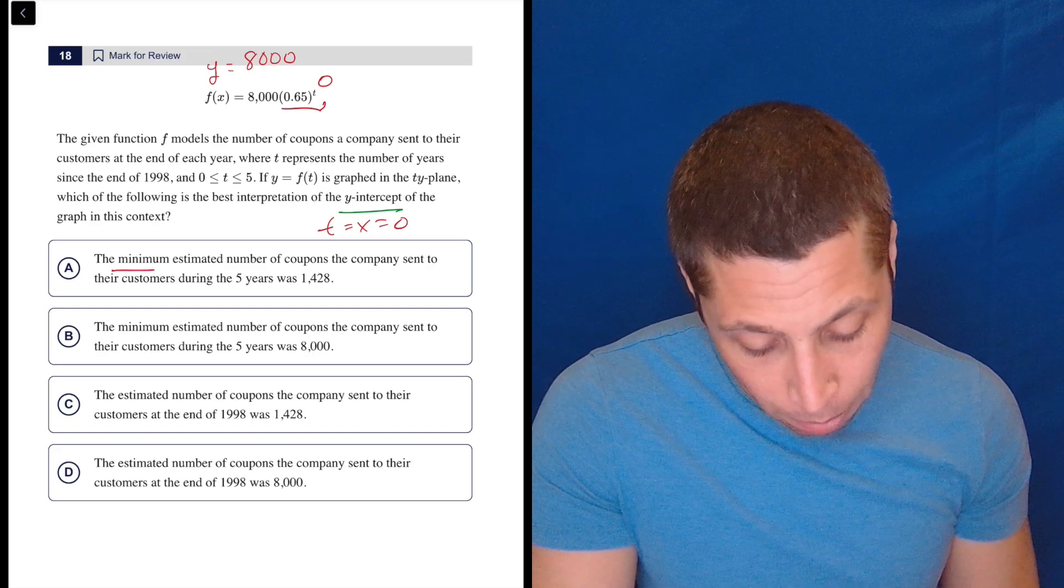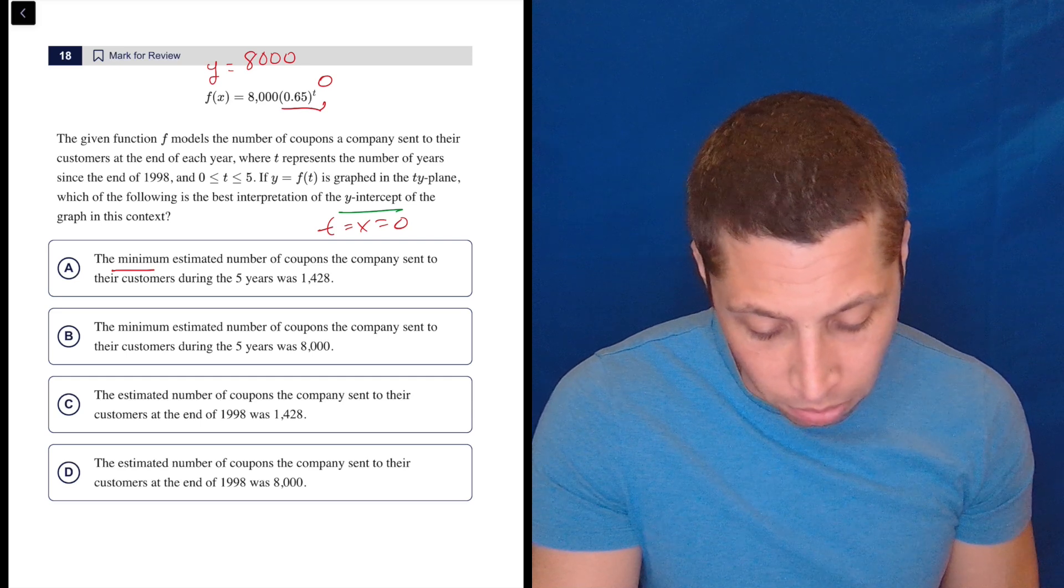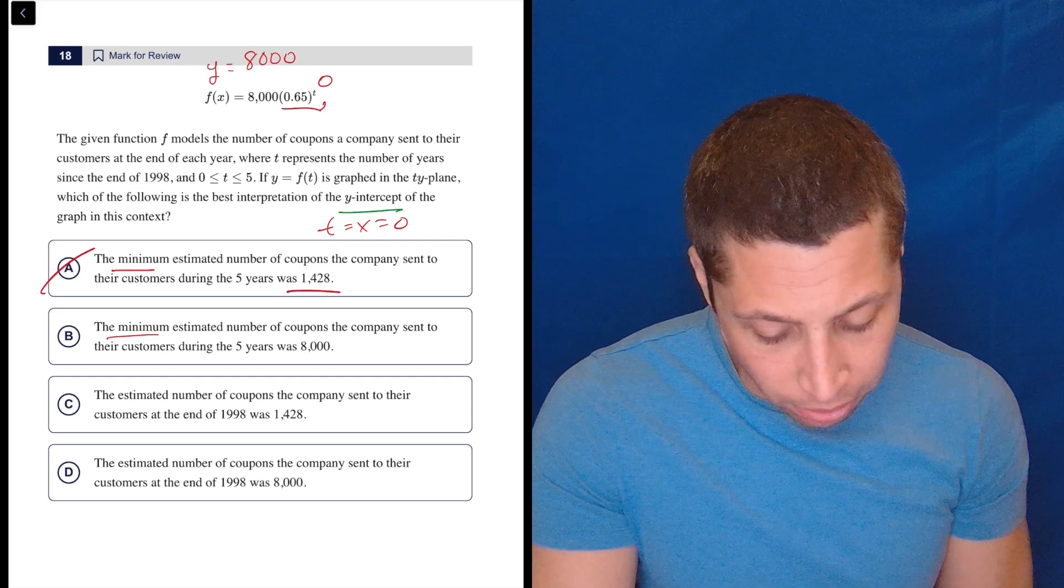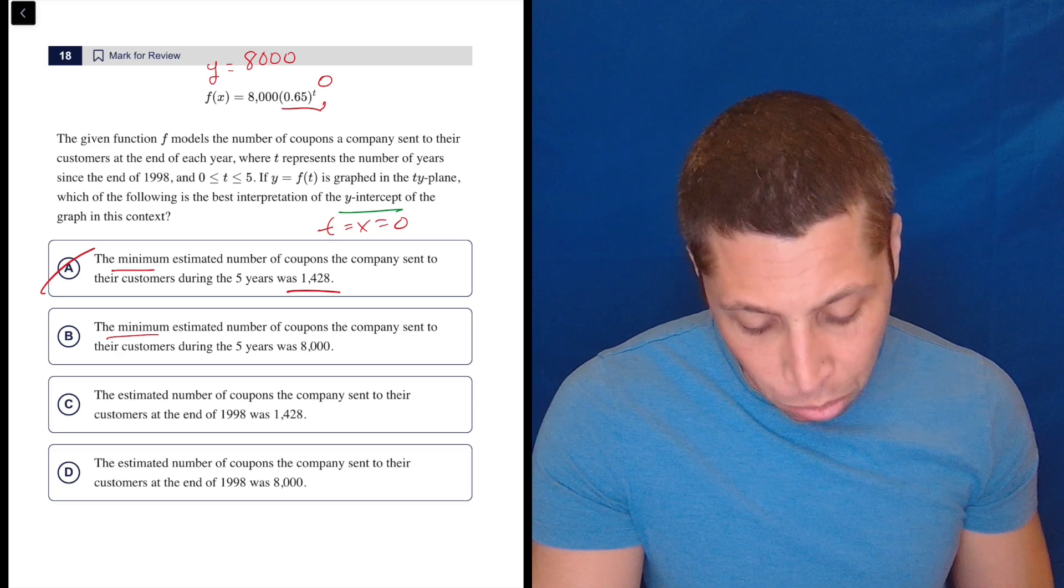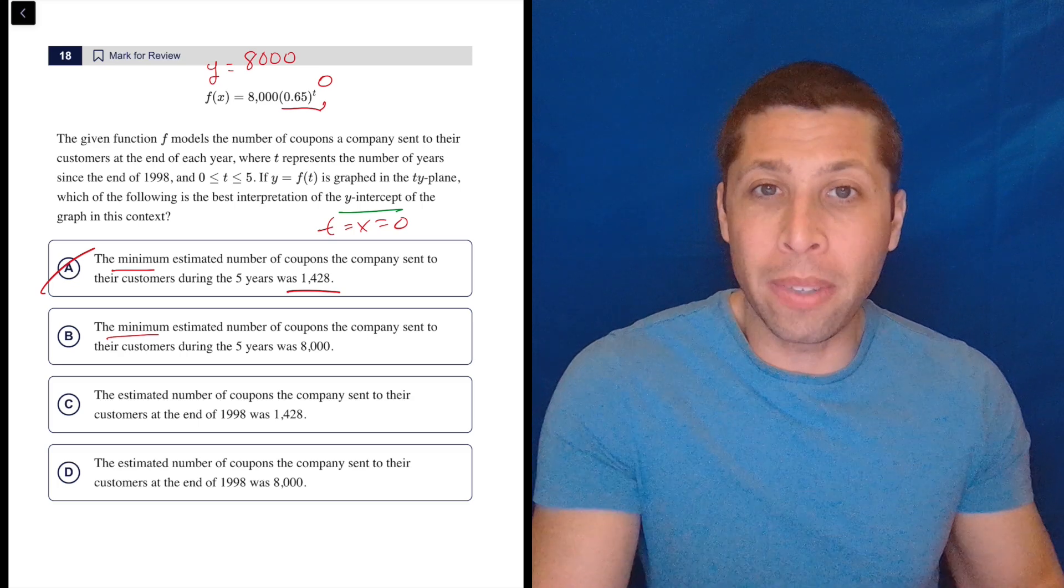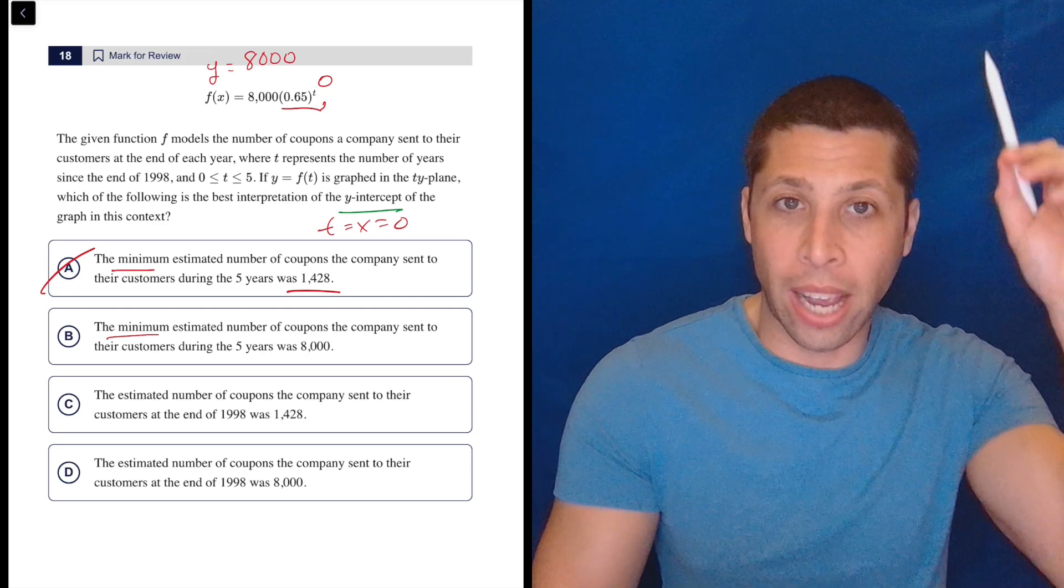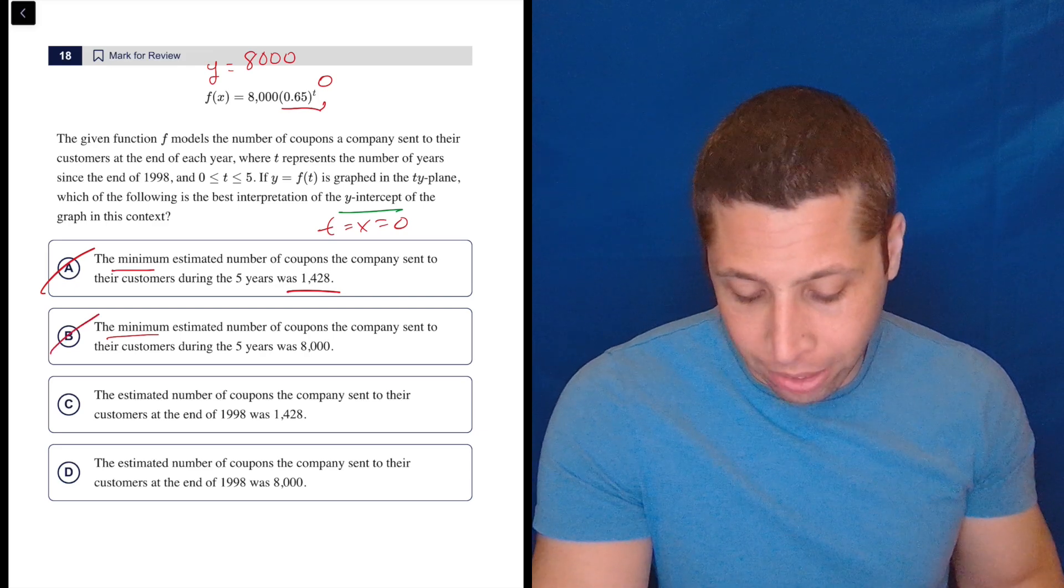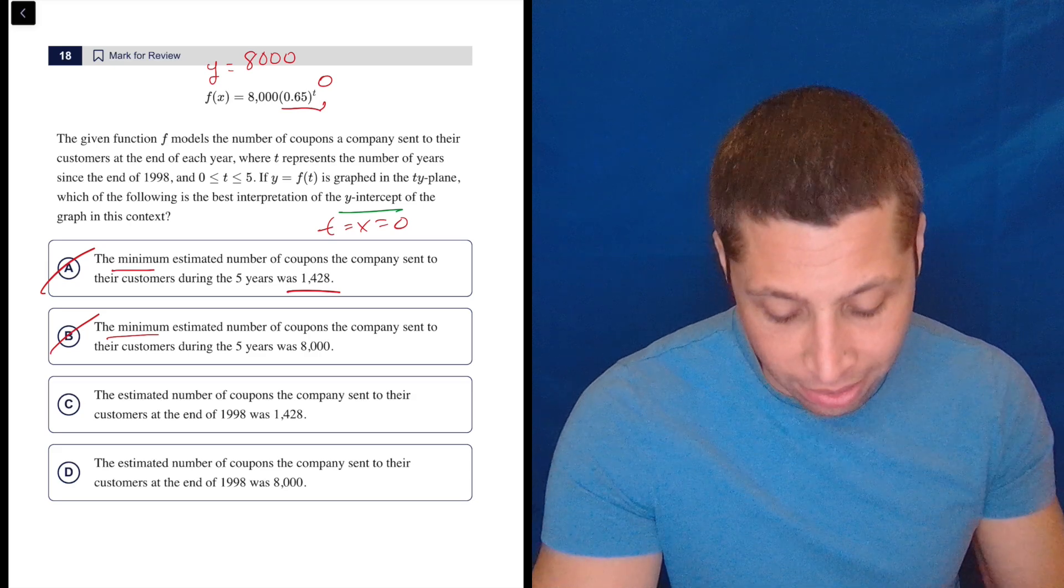So A, the minimum estimated number of coupons the company sent to their customers during the five years was some random number. No. Still not a minimum. No, I mean, maybe, but minimum does not sound right. Minimum sounds like a vertex if I had a parabola, but I don't think it's going to be a minimum. I could revisit this choice if nothing else worked, but I'm looking for something that says starting point.